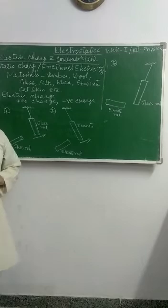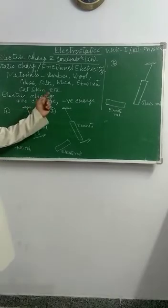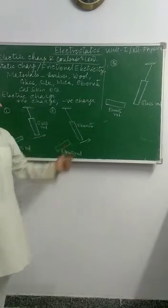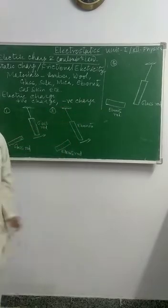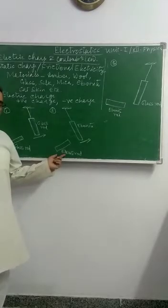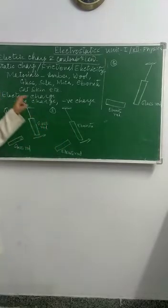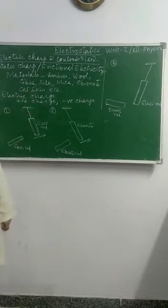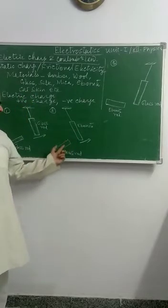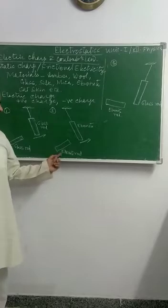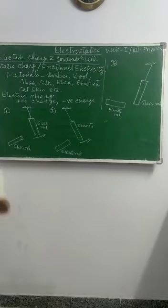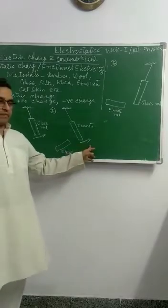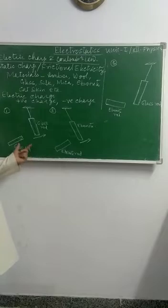Now, in the second experiment, we will take the Amorite, which is a type of wood. This Amorite rod is suspended by a cotton thread. Another Amorite rod rubbed with the cat skin — when one rod is taken towards the second rod, the first rod gets moved away. So, this shows that like charges repel each other.